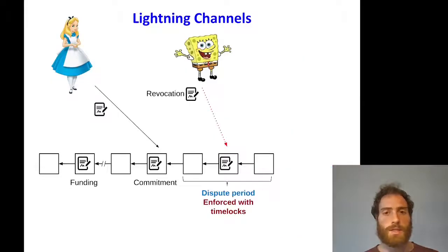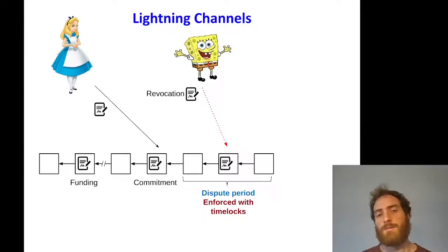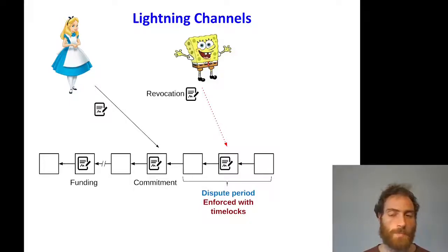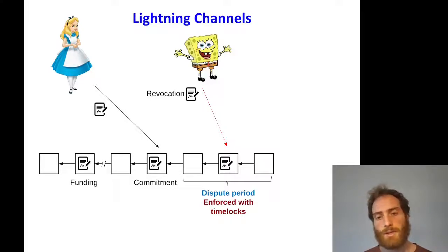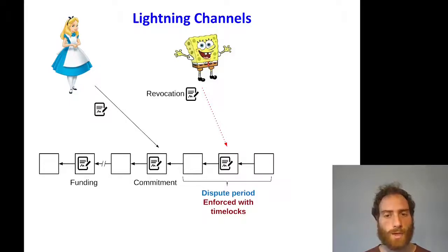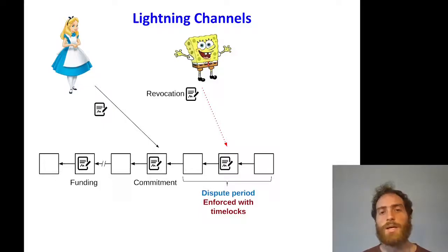How does the channel close? The funding transaction has been put in a very old block possibly. This is specific to Lightning channels: when Alice wants to close her channel, she publishes a commitment transaction. Should she be able to take her coins right away? The answer is no, because maybe she is malicious and publishes an old commitment transaction which does not correspond to the current channel state. To prevent this, her coins are locked for a dispute period enforced with time-locks. During this period, Bob can publish a revocation transaction to punish Alice and take all her money. So Alice is disincentivized from publishing any old commitment transaction.